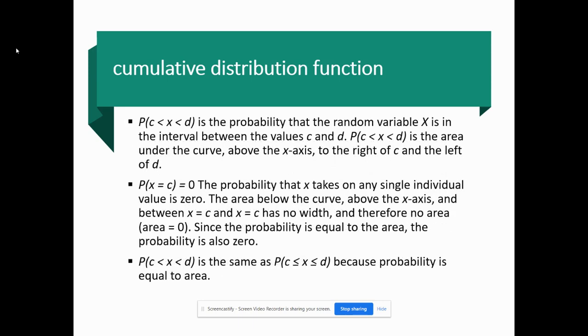The probability of c less than x less than d is the probability that a random variable x is in the interval between the values of c and d. P(c < x < d) is the area under the curve above the x-axis to the right of c and to the left of d.